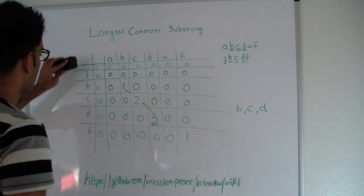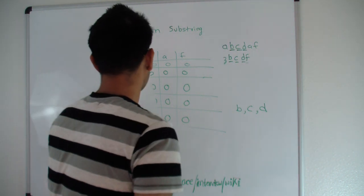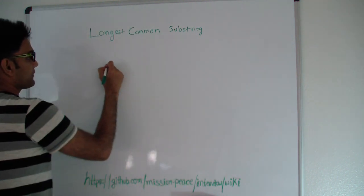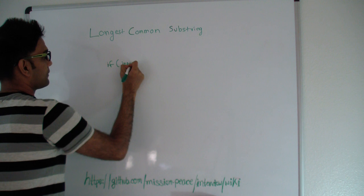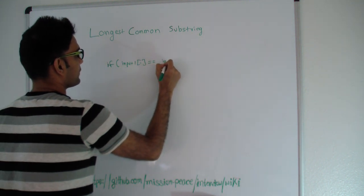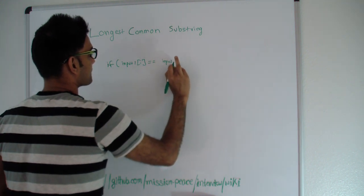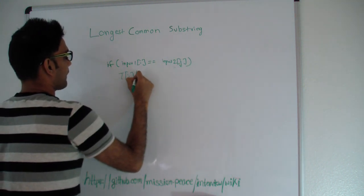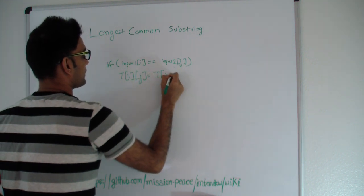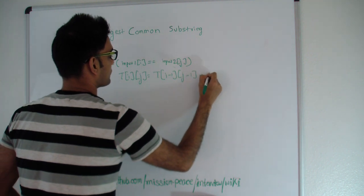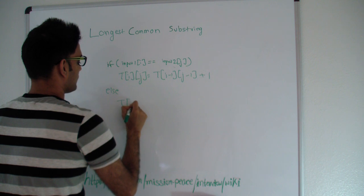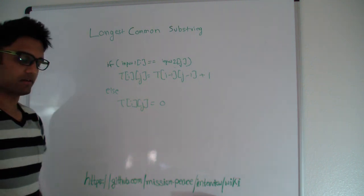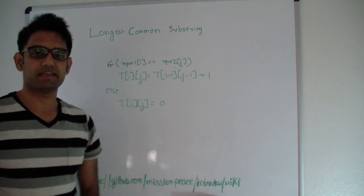Let's look at the formula. If input1[i] equals input2[j], then T[i][j] equals T[i-1][j-1] plus 1. Else T[i][j] equals 0. If you want the full solution, go to my GitHub link: github.com/mission-peace/interview-wiki. Thanks for watching this video.